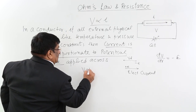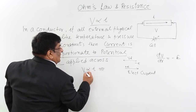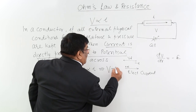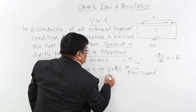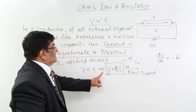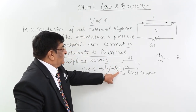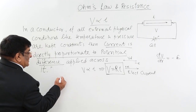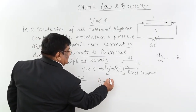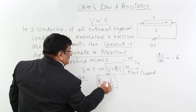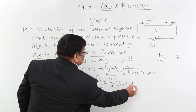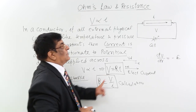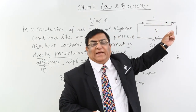So if V is proportionate to I, then by putting a constant we can write V equals a constant multiplied by I. This is Ohm's law. Now we have to specify this constant — he termed it as resistance. Resistance is V upon I by calculation. This is a calculation of resistance, not the definition of resistance. Resistance is a characteristic of this medium.